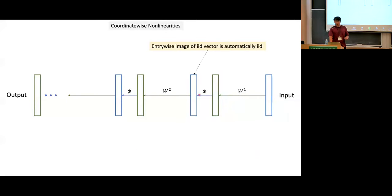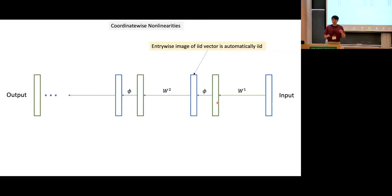This is the base case — entirely elementary and trivial so far. Next, let's look at the first nonlinearity application. We're mapping every entry of this green vector through nonlinearity phi, getting this blue vector. This is very trivial: we already said the green vector has IID entries, so when you map each entry through the same function, the resulting vector still has IID entries. The distribution now changed under a push-forward of phi, but the blue vector still has roughly IID entries.